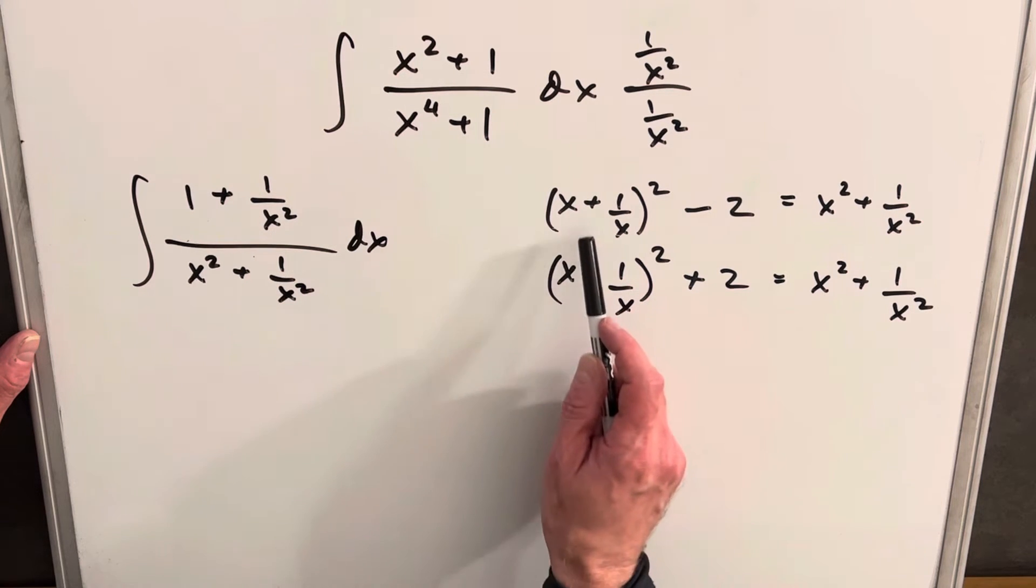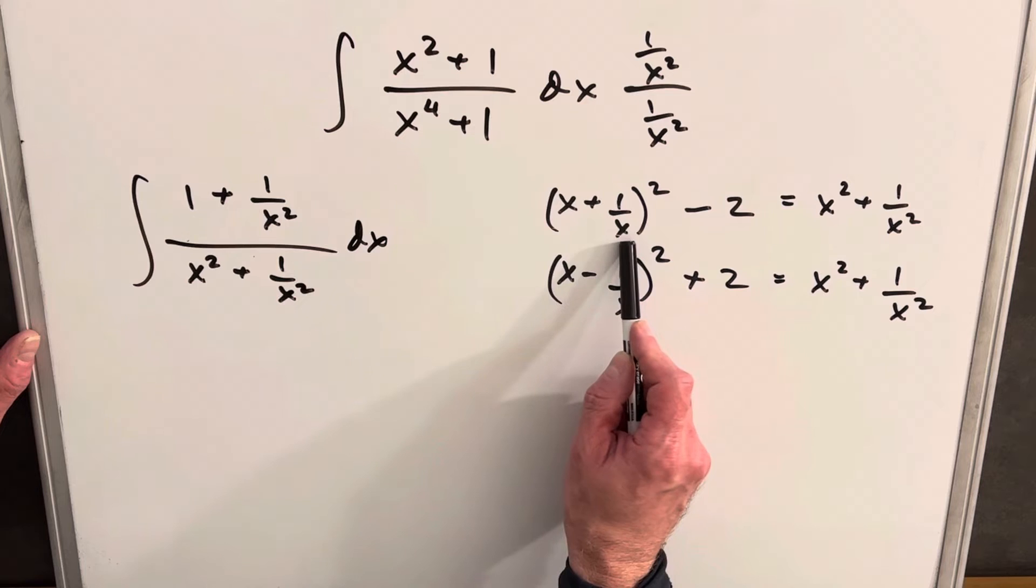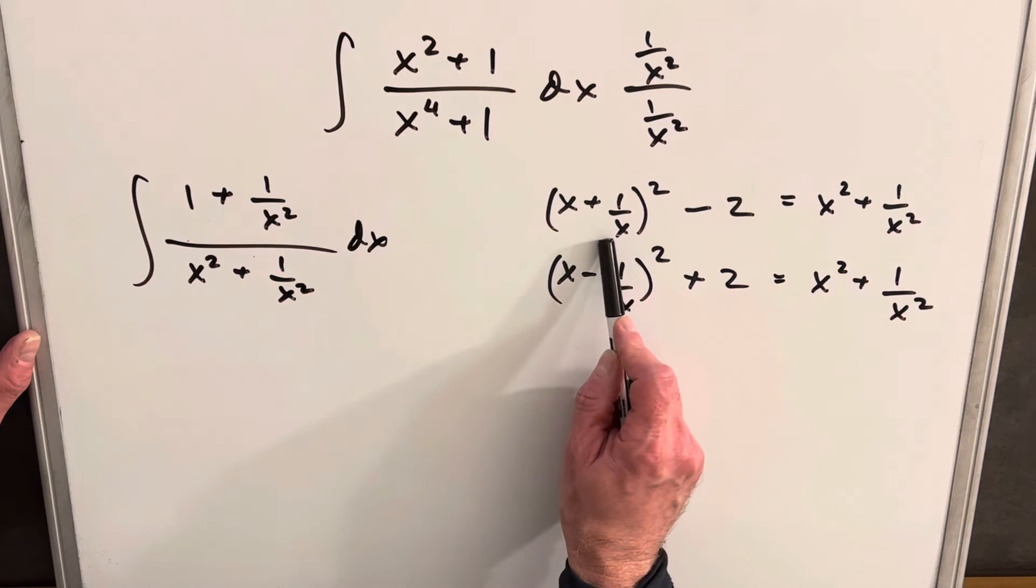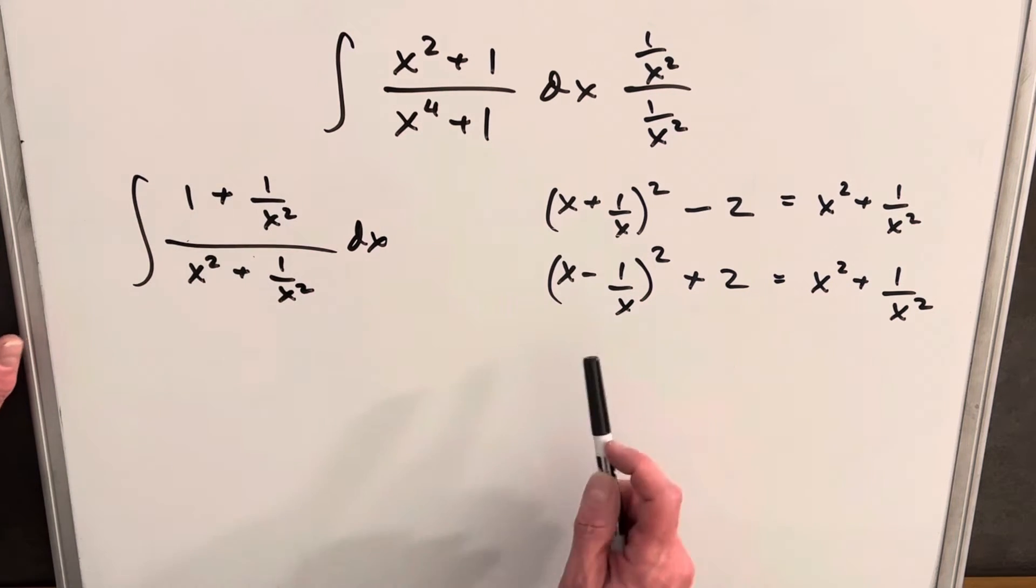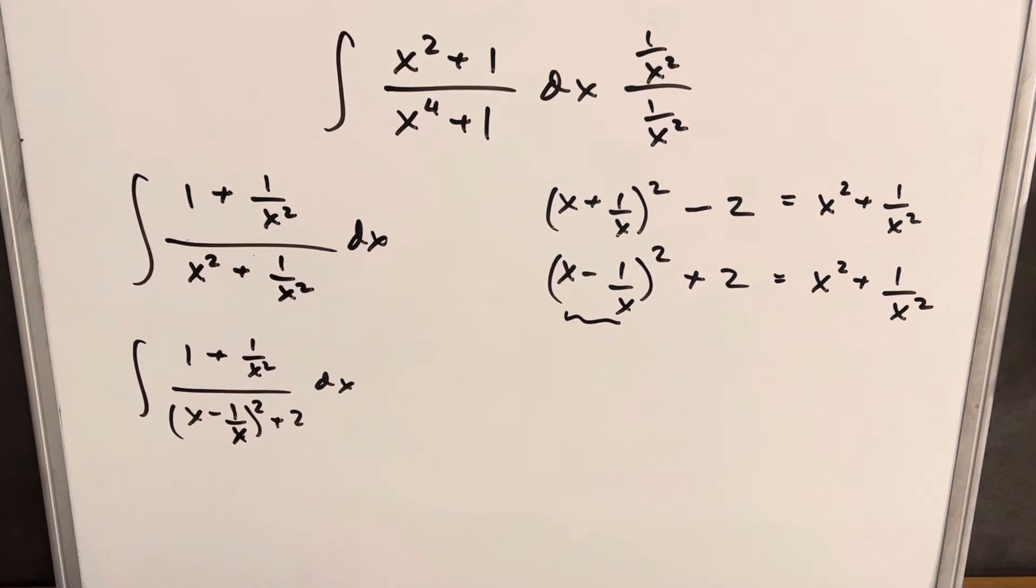What I'm trying to do is set up a u substitution where either this piece or this piece is going to be our u. But we notice here, because we're going to have a negative exponent, when we take the derivative of this we're going to get a negative and we need a plus here. So I think this way is going to work better.